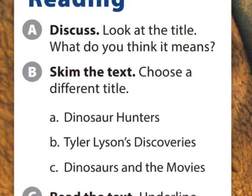Let's continue to exercise B. It says: skim the text and choose a different title. Remember, skim means to scan. When you scan a text, it's not necessary to read every single word, and it's also not necessary to understand everything. You're just scanning — like doing a word search.